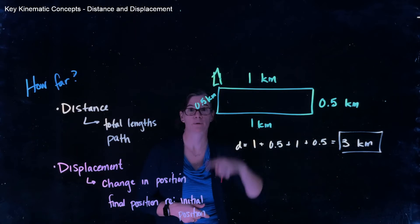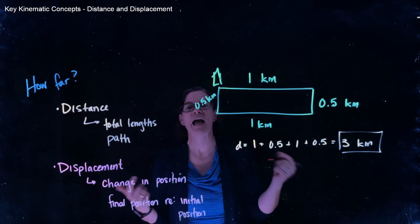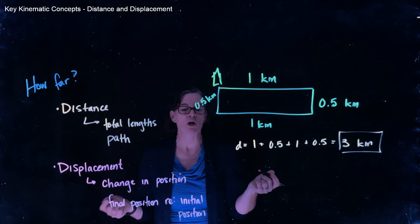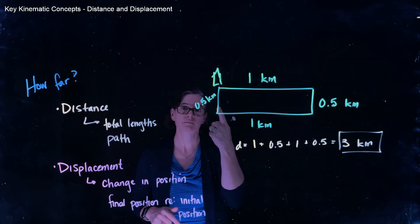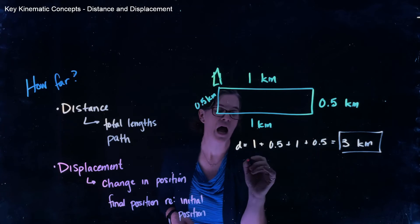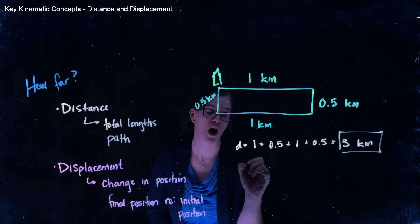She could have also ran to target and come back, and the partner would have been none the wiser. So we only care about the object's change in position. So in this example, our change in position, our displacement,